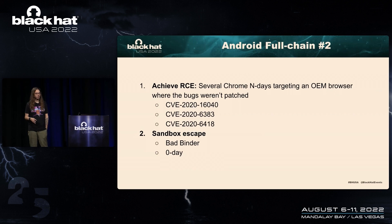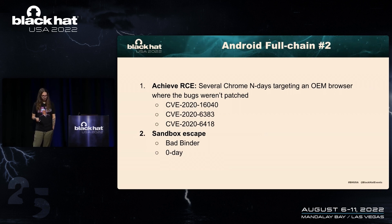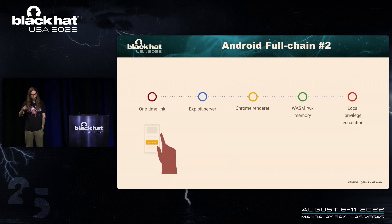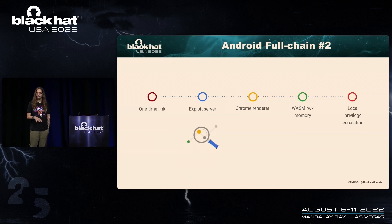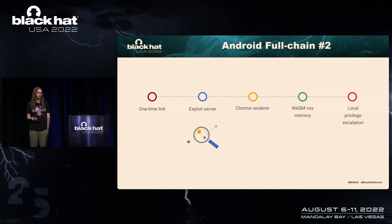For the sandbox escape part — to escape from Chrome — in some cases they were using the BadBinder vulnerability mentioned earlier, but in other cases they were actually using a zero day, which you'll hear more about very soon. Let me take you through the timeline of how this looks for a targeted user: first, the user receives a one-time link and clicks it. When they click it, they're redirected to an exploit server whose job is to fingerprint the device and serve the correct exploit depending on browser version, OS version, and so on.